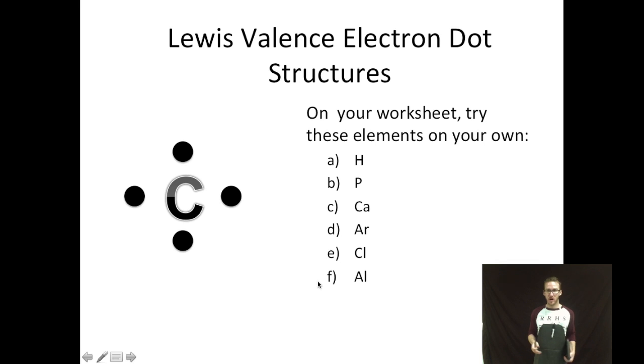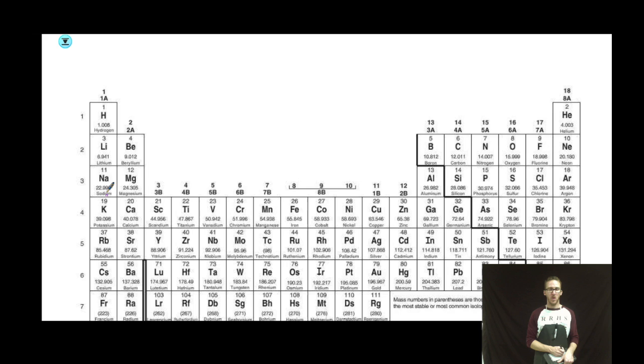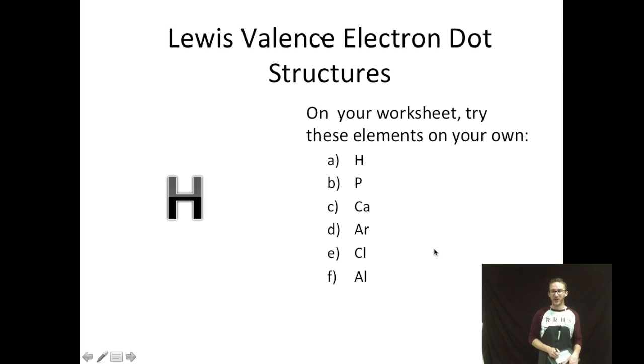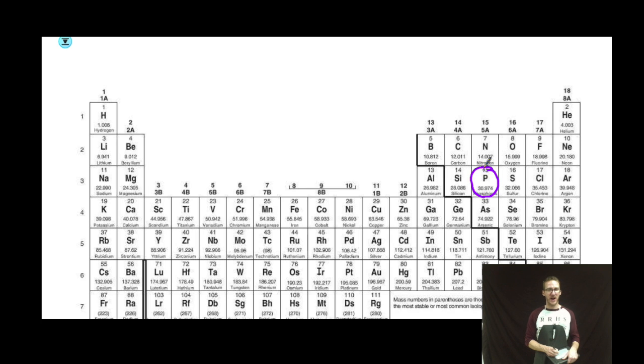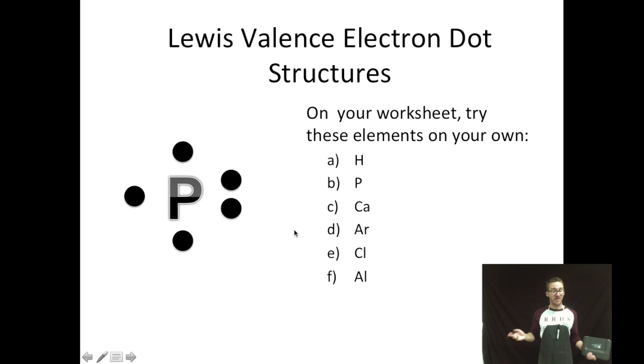Should we try some more? Let's do hydrogen. Group one. Starting at the right every 90 degrees. But that's all we've got, so we are done. I'm going to trick you up on this one. I'm going to show you the Lewis valence electron dot structure. Which group do you think it's in? If you guessed group five, you are a winner. Five valence electrons. So of course group five.